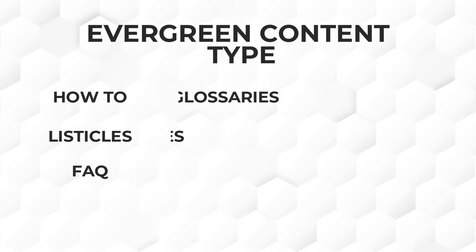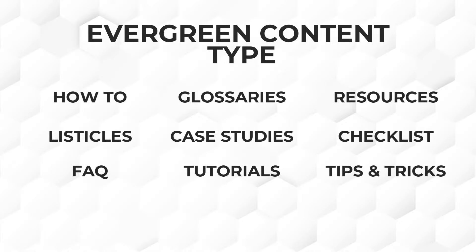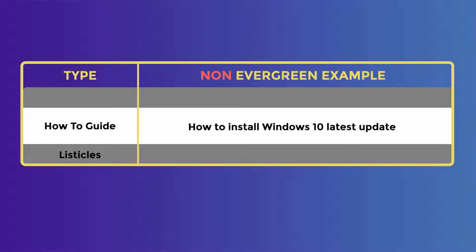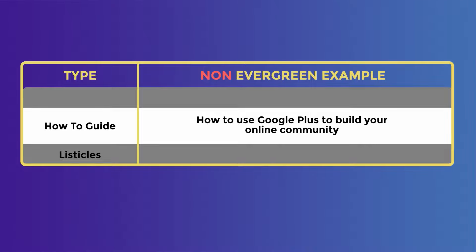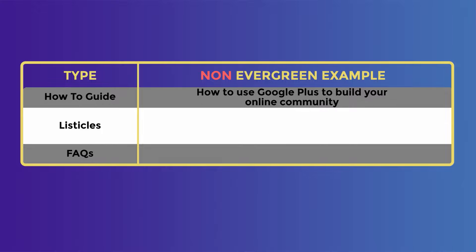It is true that most evergreen content can be found in these formats, but not all topics in the format are evergreen. For example, how to install Windows 10 latest update — most people have switched to Windows 11, so this piece of content becomes semi-evergreen because there are still some people who didn't switch. A how-to topic that is truly not evergreen will be how to use Google Plus to build your online community, because Google Plus is phased out. A non-evergreen listicle will be best Amazon Prime Day deals for 2022, because the deals in the content will no longer be available.